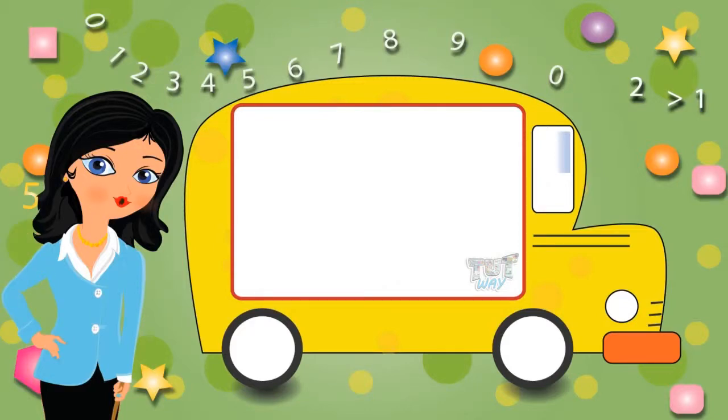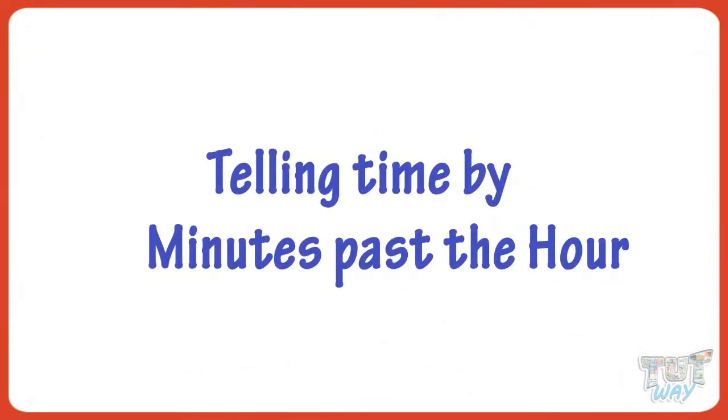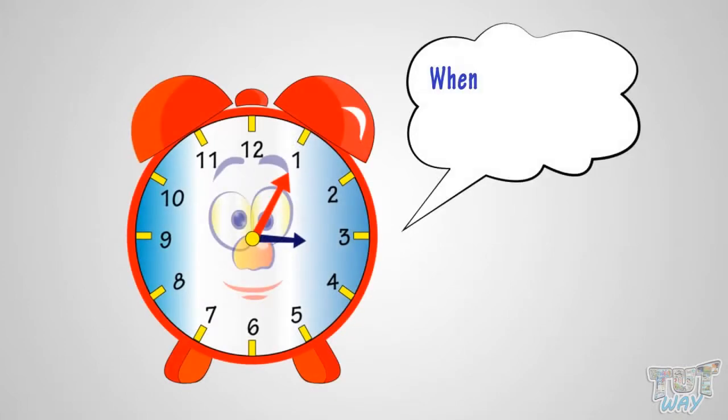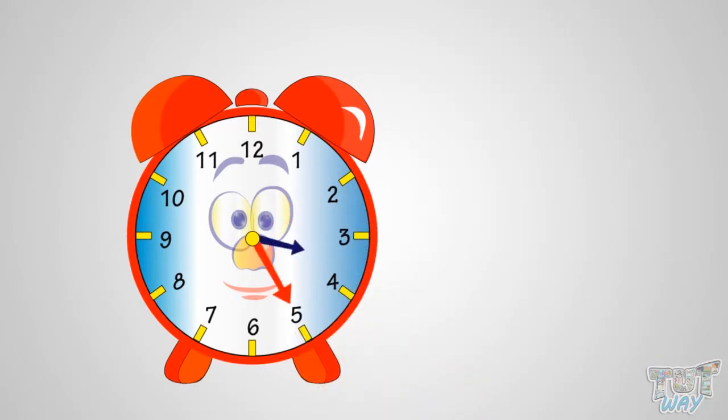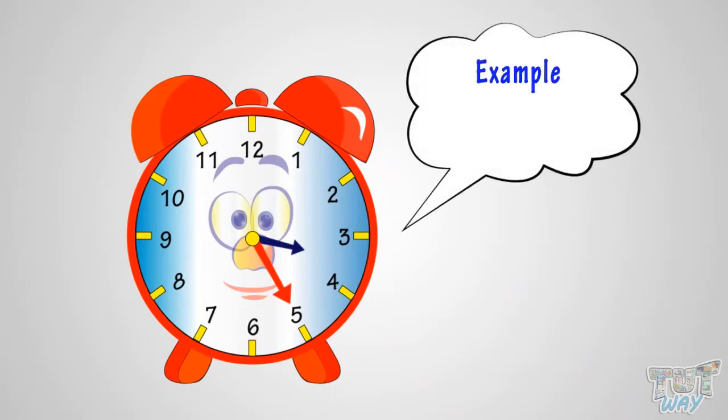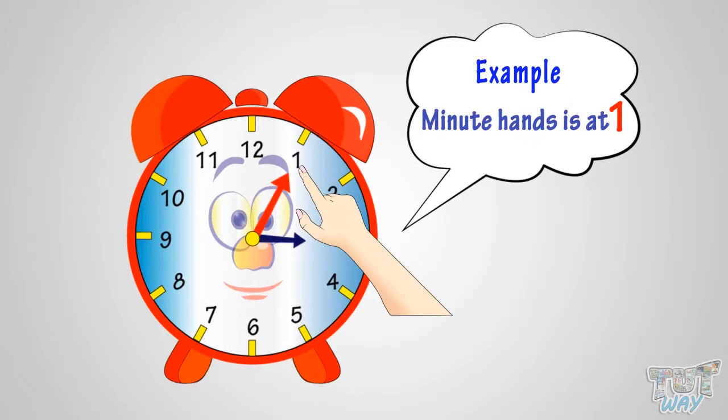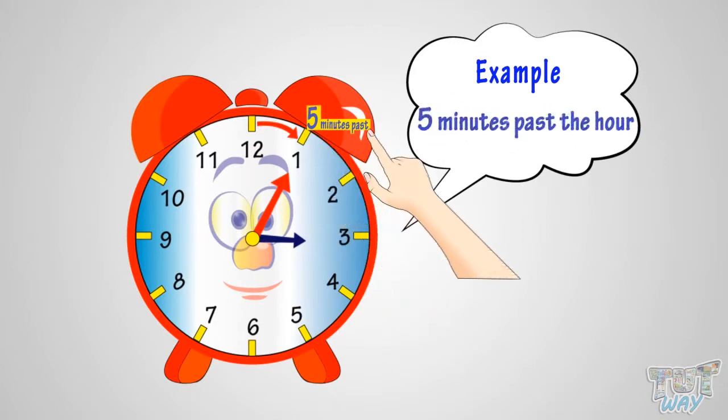Hi kids, now let's learn how to tell time by minutes past the hour. When the minute hand is on numbers 1, 2, 4, or 5, we tell time by minutes past the hour. See the example: the minute hand is at 1, so count by fives from 12 to get the minutes. It is five minutes past the hour.